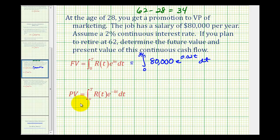And now for the setup for our present value, it's almost exactly the same, except notice how we'll have negative Kt as our exponent.